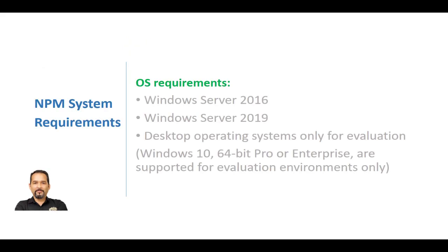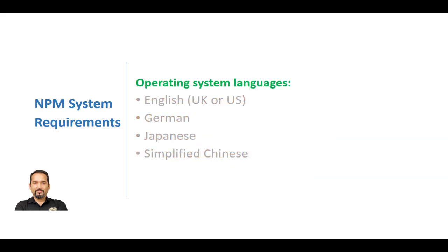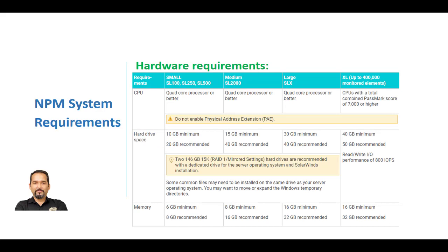The following table lists software requirements and recommendations for an NPM, or Network Performance Monitor, installation on both physical and virtual computers. As you can see, we can install NPM software on these operating systems. Keep in mind that Windows 10 64-bit Pro or Enterprise Edition should only be used for evaluation or testing SolarWinds applications.